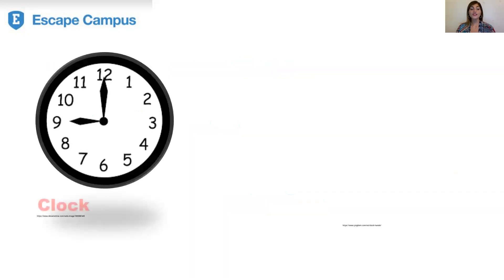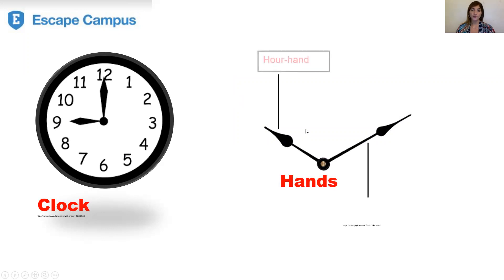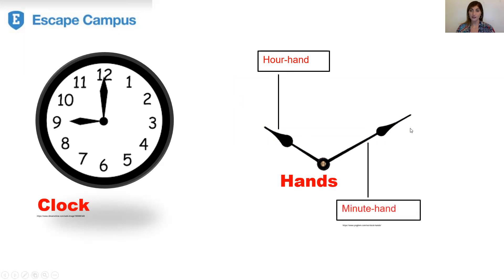This is a clock. On a clock there are two hands. The short hand is called the hour hand and shows the hour. The long hand is called the minute hand and shows the minutes.